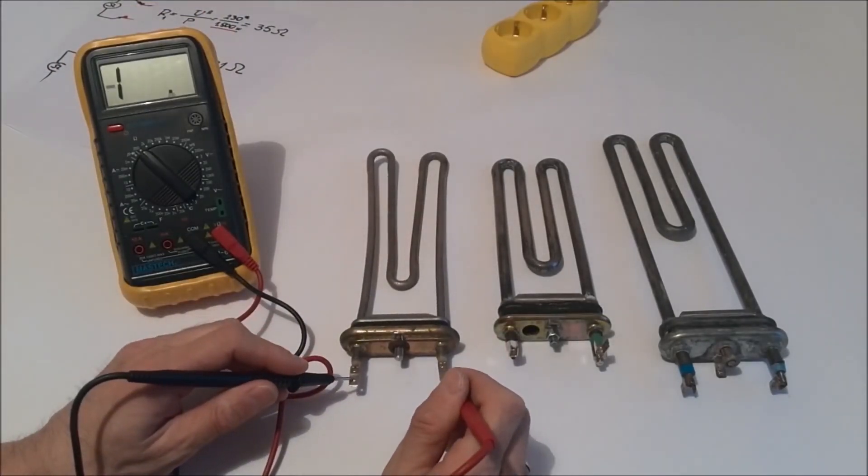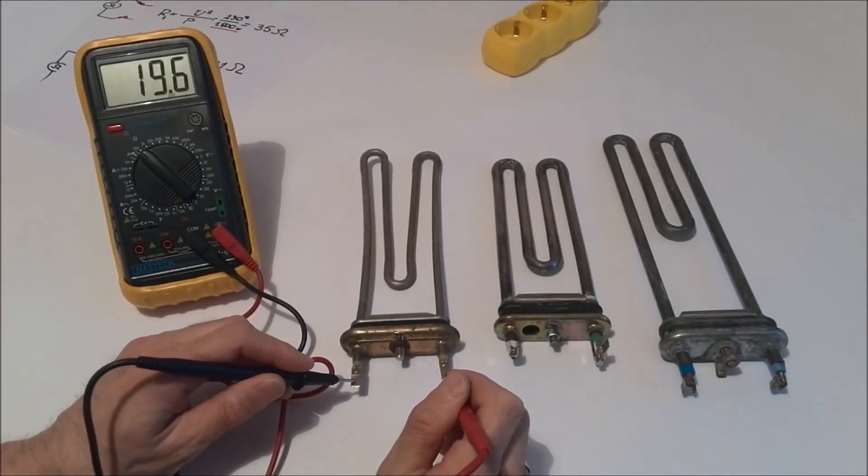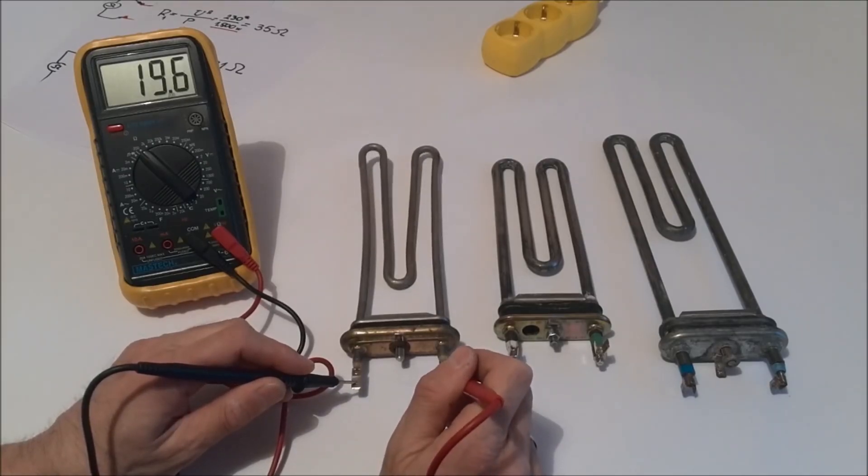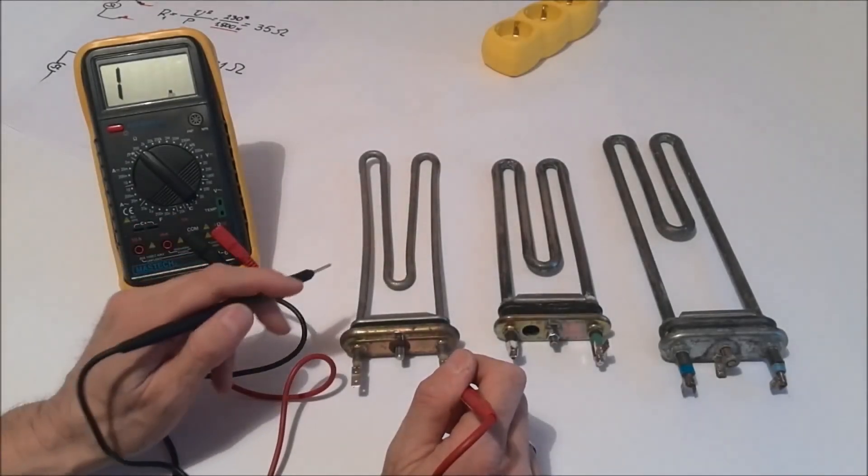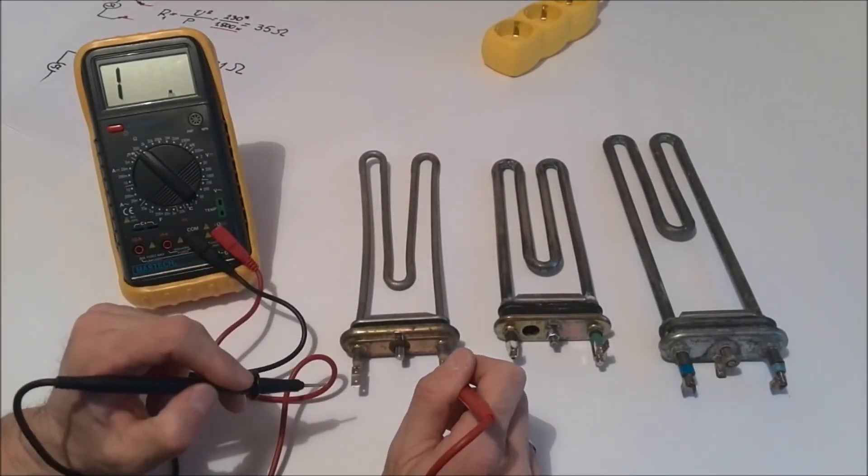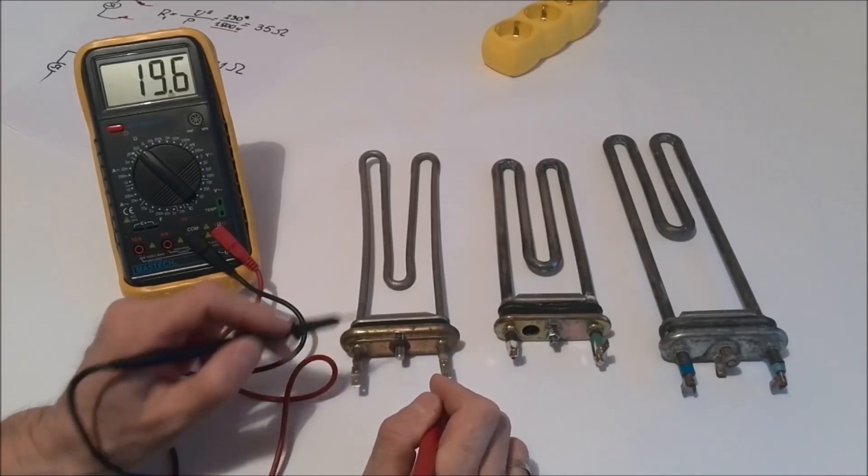We will measure the resistance of the first heater. It shows 19.5 ohms. This indicates that the heater has a chance to be working properly. We still need to check that it isn't in contact with the metal part of the cover, as workers say breaking through the mass.